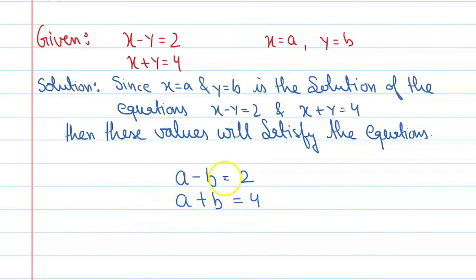Alright, so if you add both equations, on add we will get b and b will get cancelled and we will get 2a is equal to 6. So a is equal to 3.